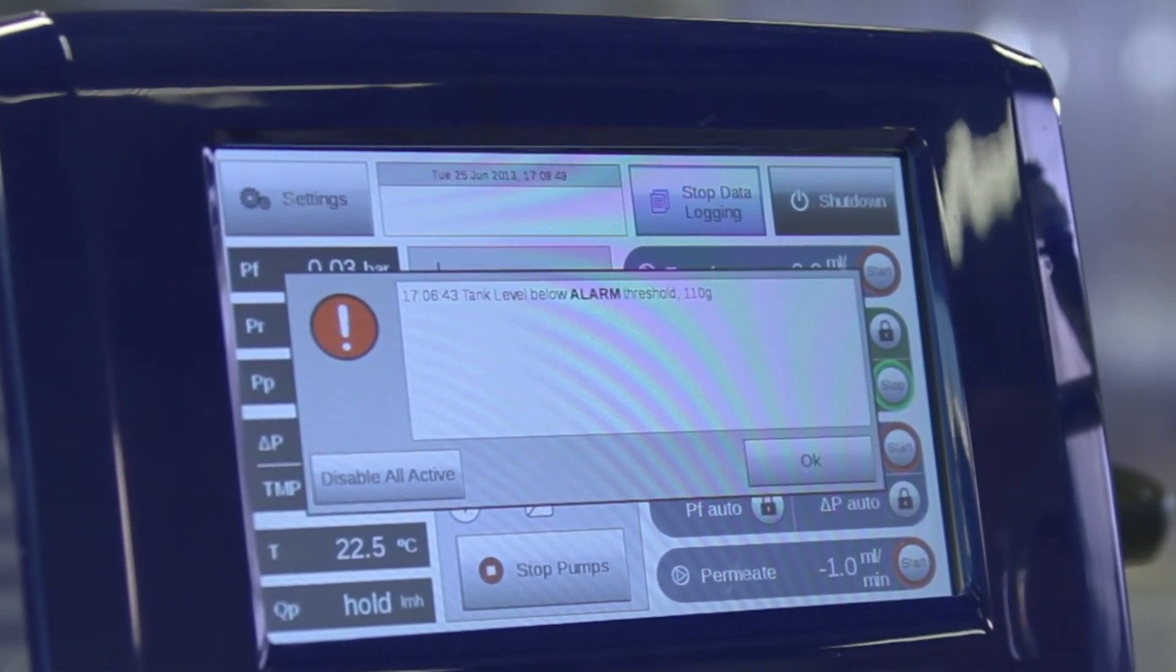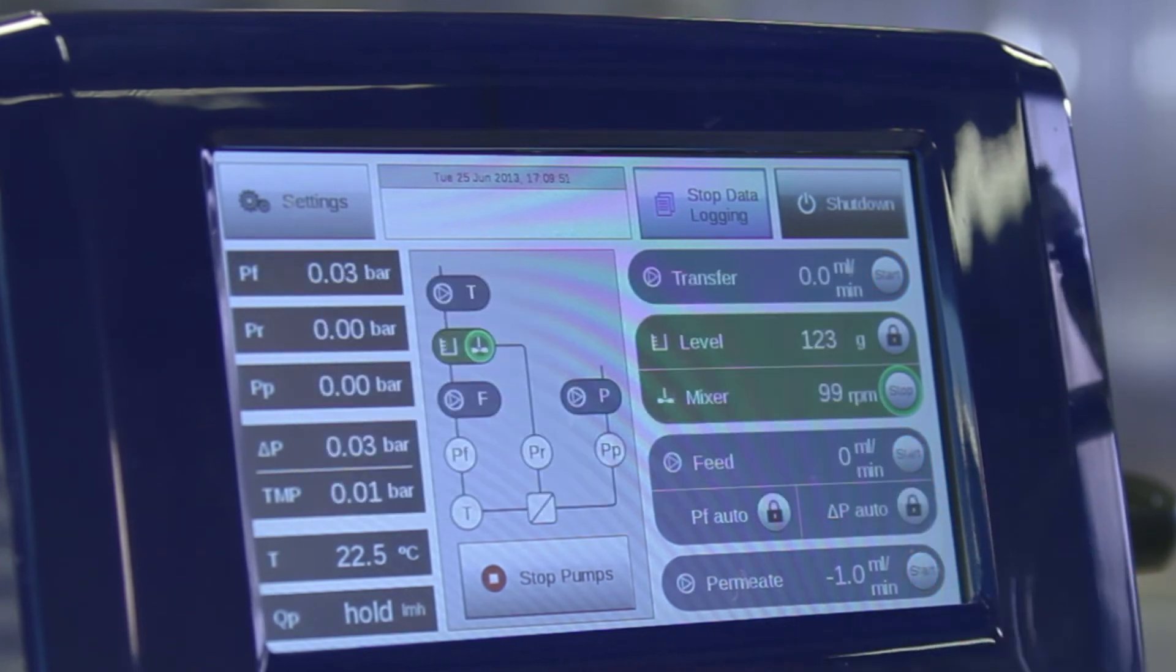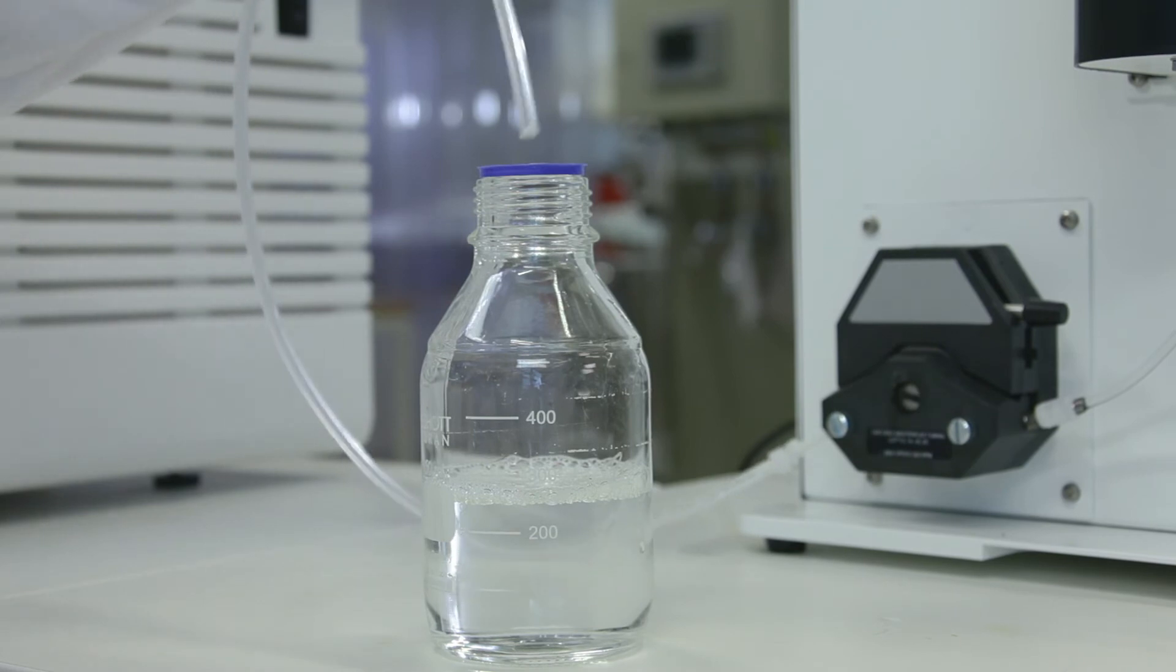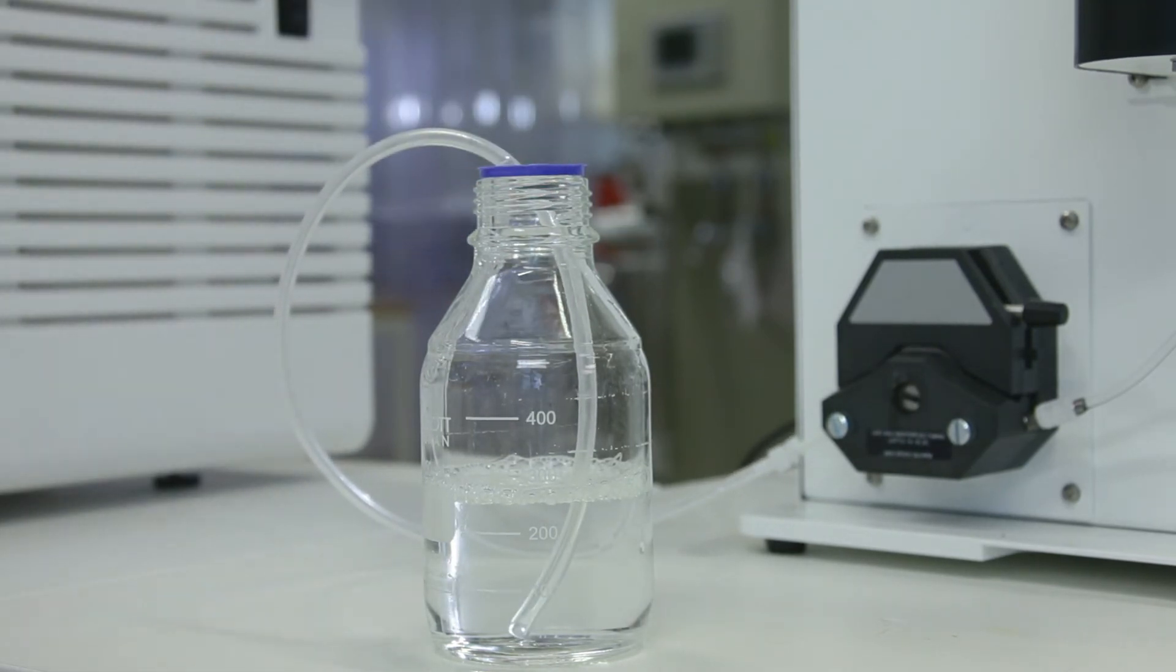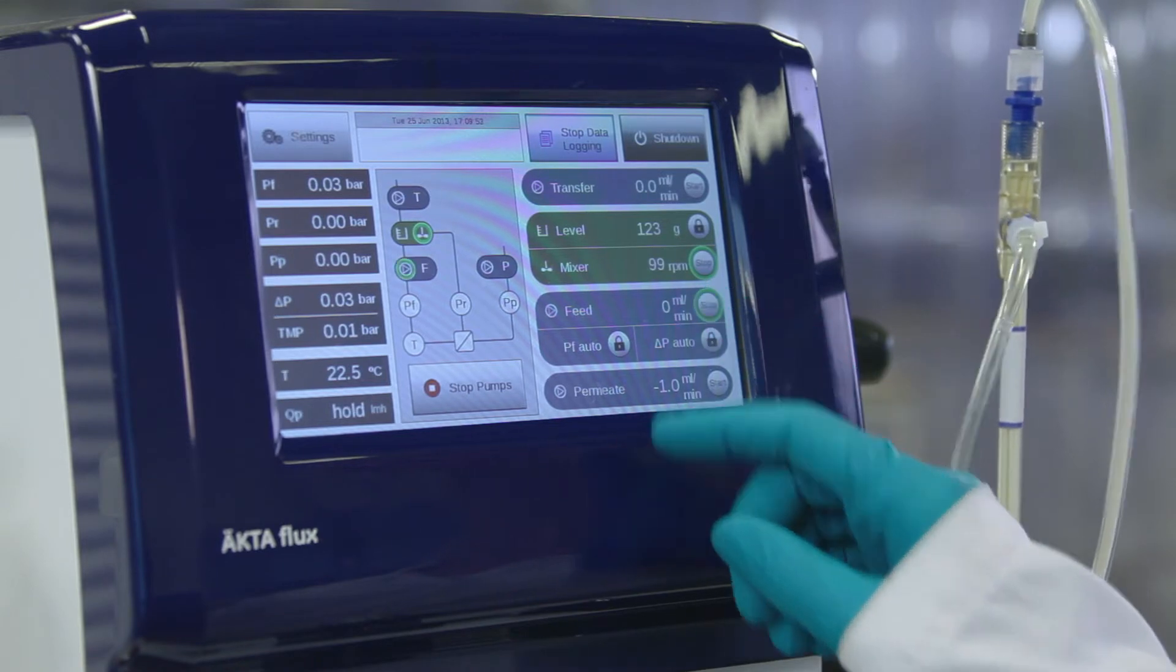The alarm goes off when the endpoint volume is reached. Prepare for wash by placing the tubing from the transfer pump in a flask with a known amount of buffer. Start feed pump.